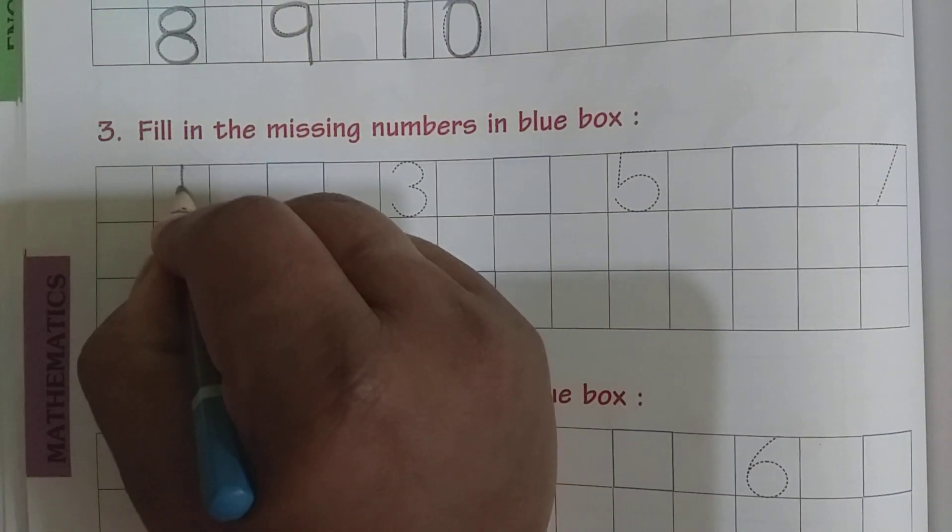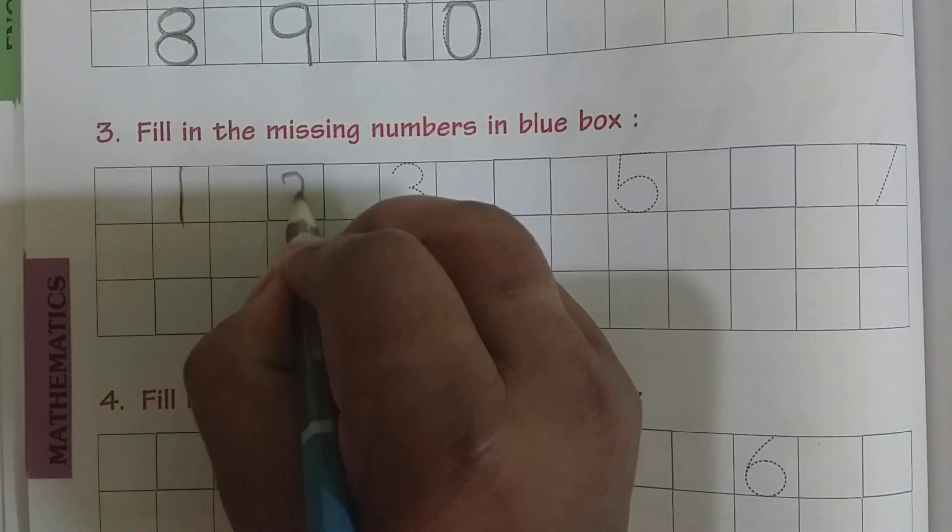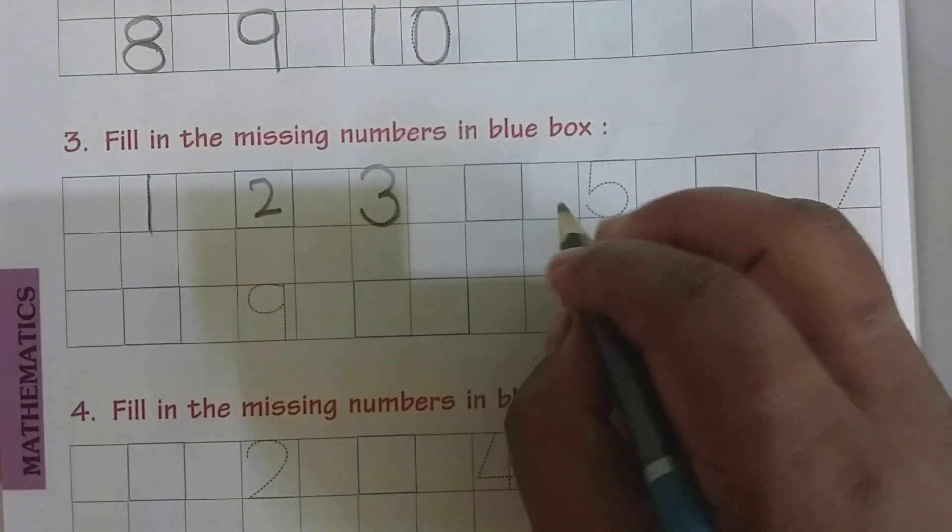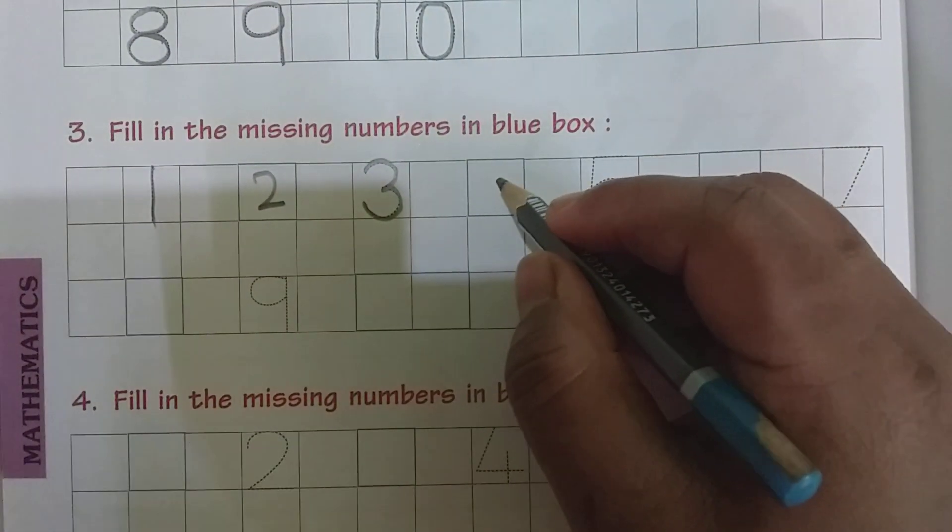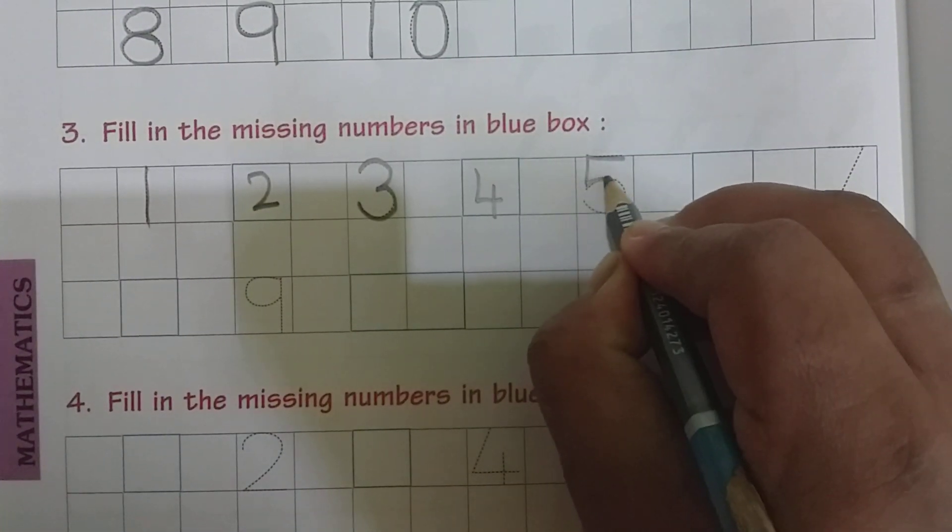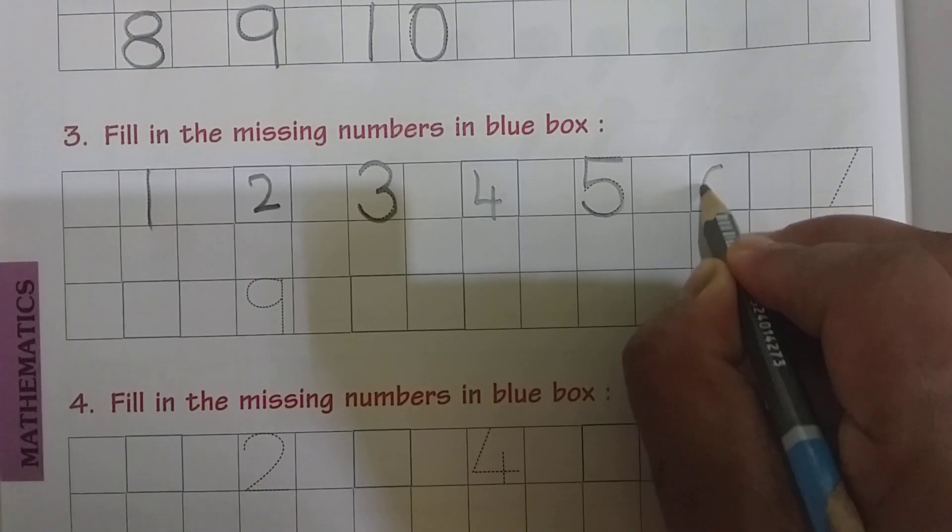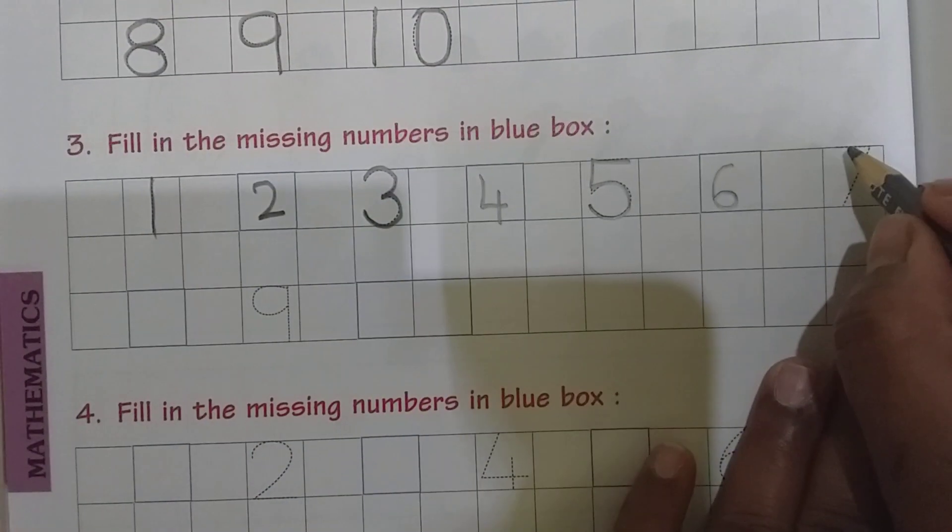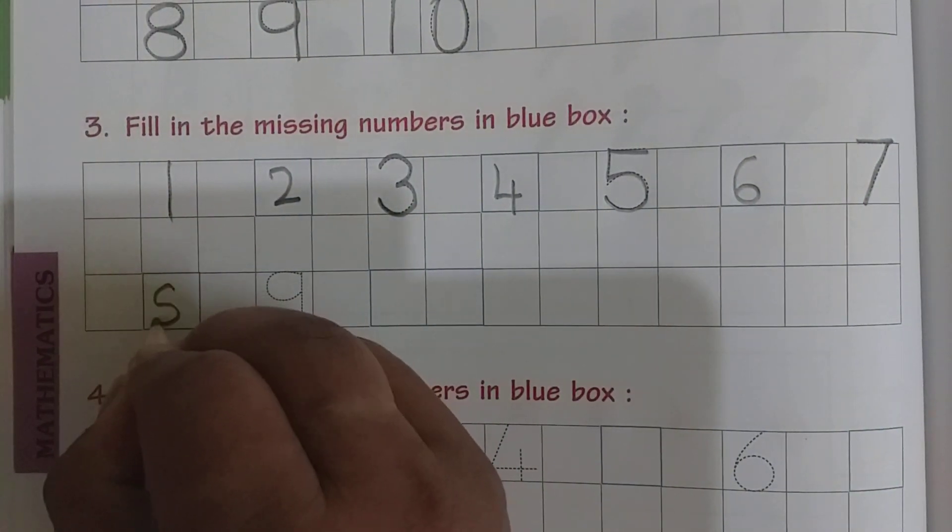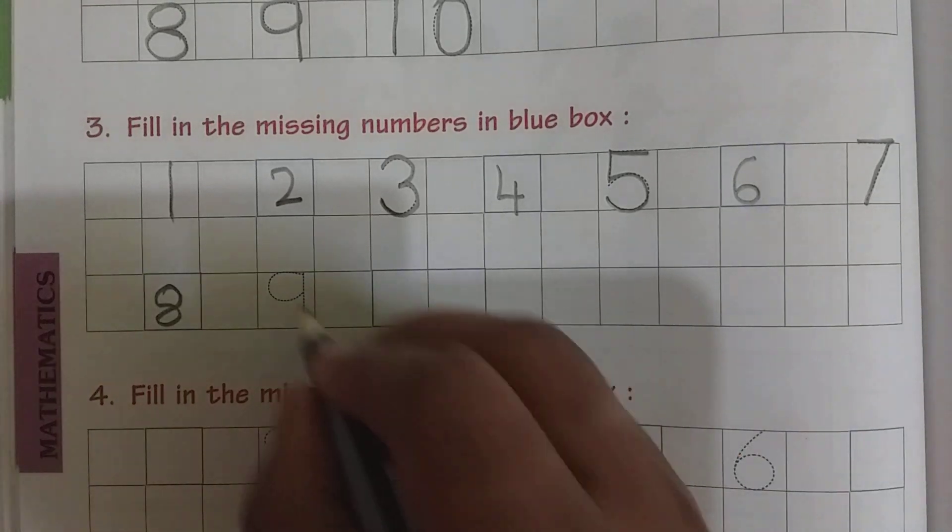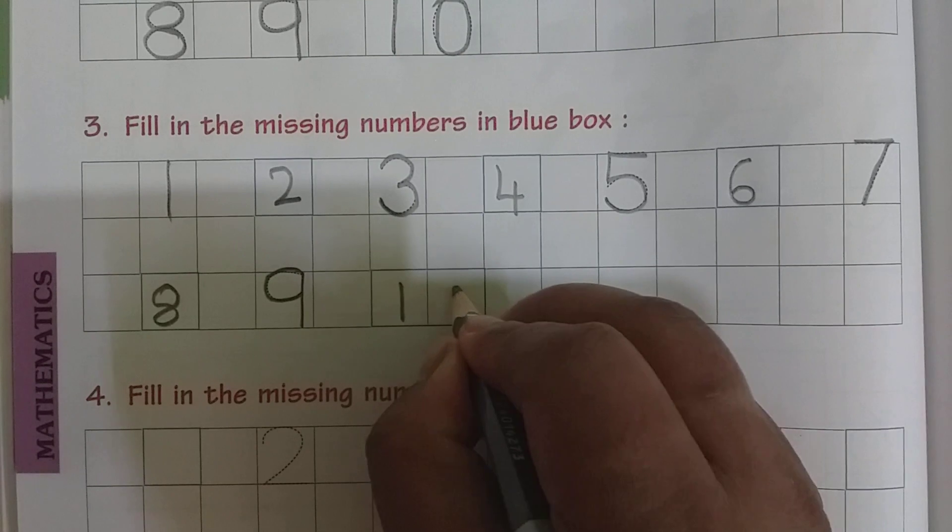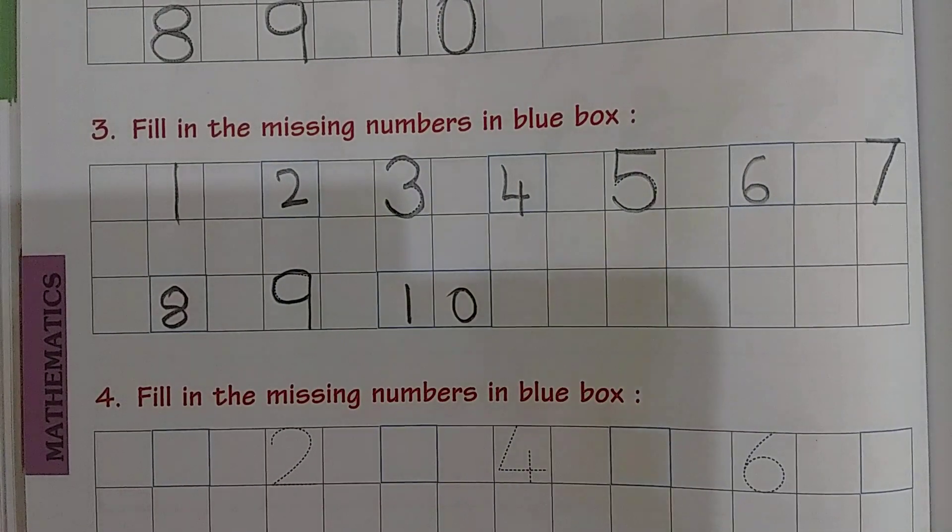1, see here I should trace here first. Next I should see here, 1, 2, because after 1 comes 2. Here 3 is there. Now what I should do? 1, 2, 3, 4. Next 5, after 5, 6, after 6, 7, after 7, 8, after 8, 9. I should trace as they have given 9. After 9, 10, 1, 0, 10. Next.